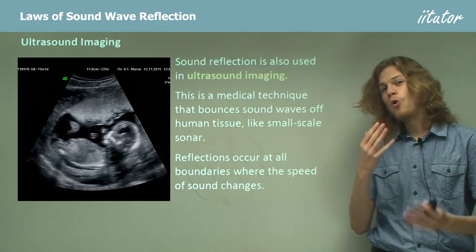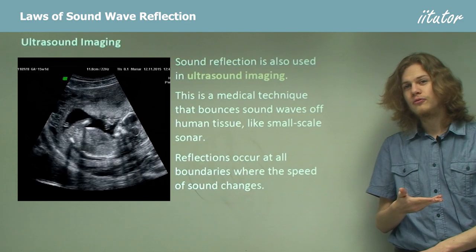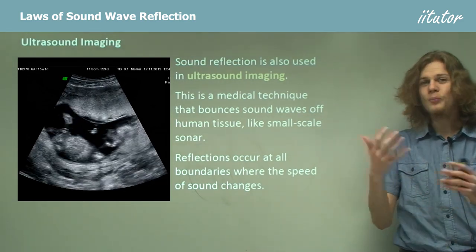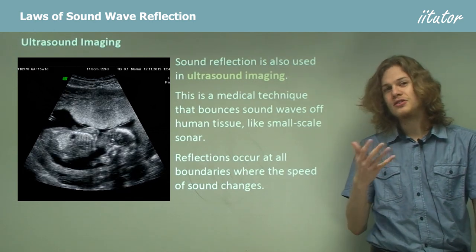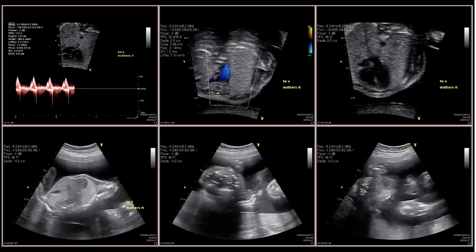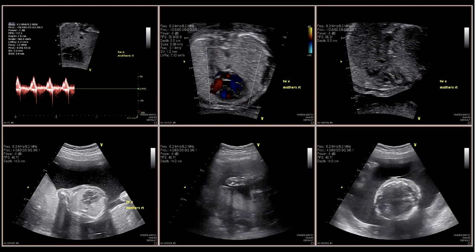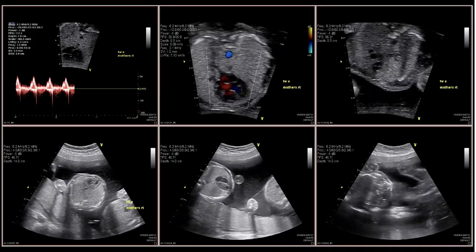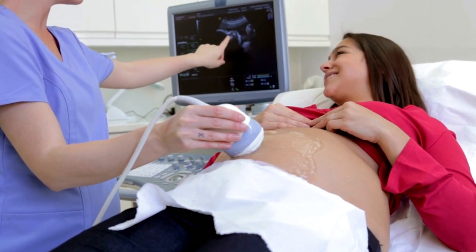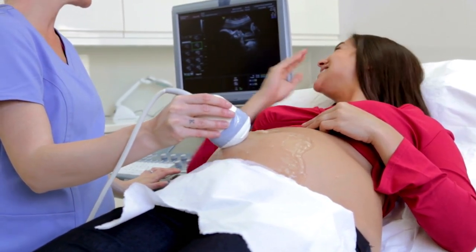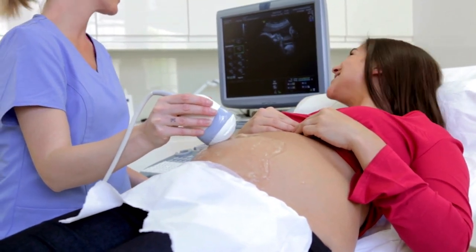Reflections occur at all changes in medium. When an ultrasound pulse is sent through the skin, part of it bounces off the skin and part is transmitted; part bounces off the blood vessels underneath; and some bounces off the bone beneath that. This allows us to build up an image of the layers underneath the skin. We can send out pulses more than 200 times per second — since ultrasound has a frequency above 20,000 Hz, we can analyse it very quickly with computers, enabling real-time imaging of moving structures.